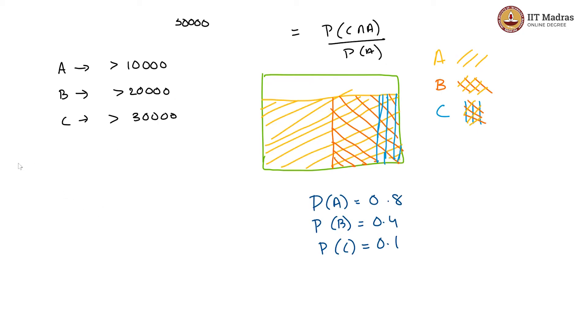For finding the intersection probabilities, what we should use is probability of union equals P(A) plus P(B) minus P(A∩B). And that would give us P(A∩B). Also P(A∩C) will be P(A) plus P(C) minus P(A∪C).